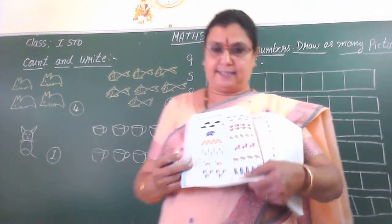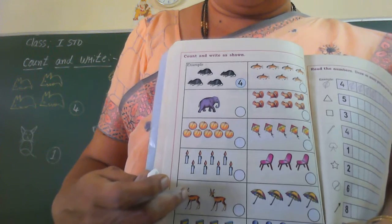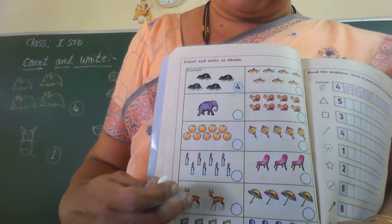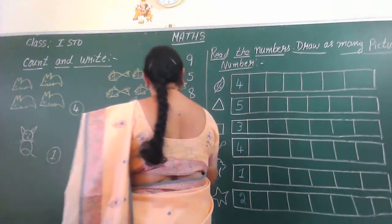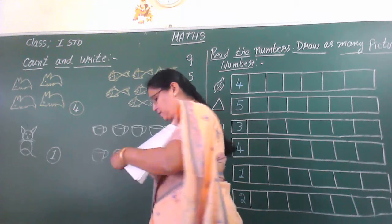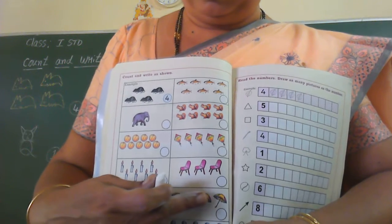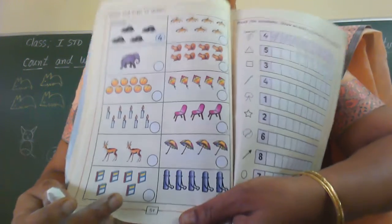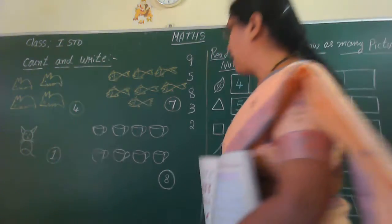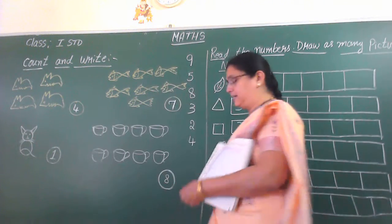Next. See, what is this? D is how many? One, two. Write two. How many umbrellas are there? Count. One, two, three, four. So in this circle you have to write four. Write number four in this circle.